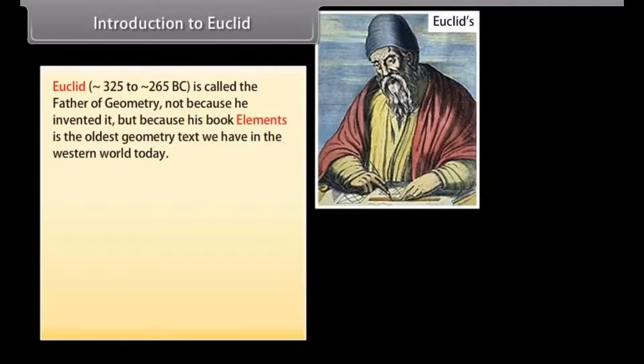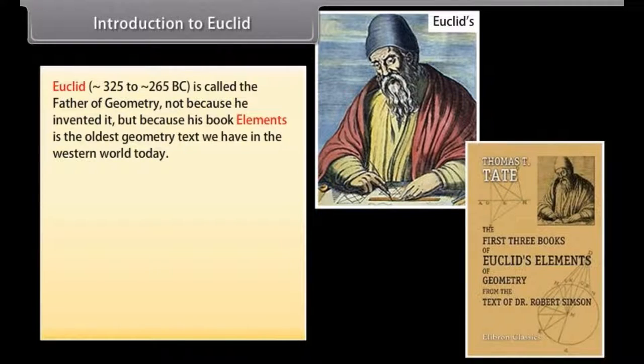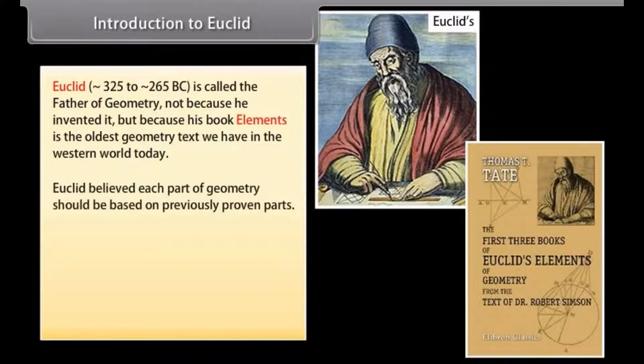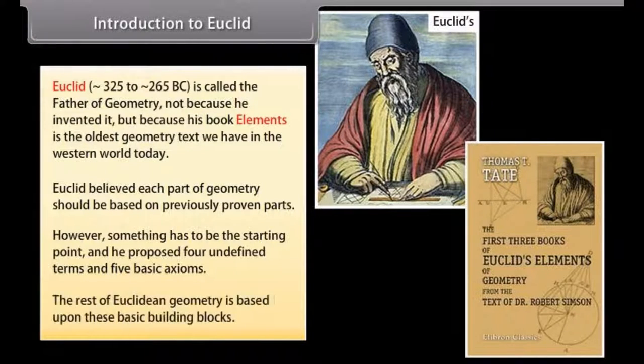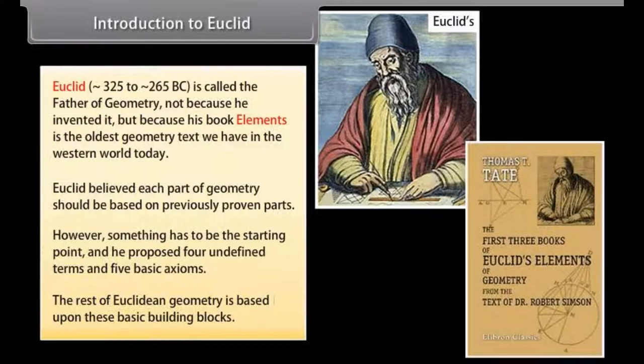Introduction to Euclid. Euclid from approximately 325 to 265 BC is called the father of geometry, not because he invented it, but because his book Elements is the oldest geometry text we have in the western world today. Euclid believed each part of geometry should be based on previously proven parts. However, something has to be the starting point and he proposed 4 undefined terms and 5 basic axioms. The rest of Euclidean geometry is based upon these basic building blocks.